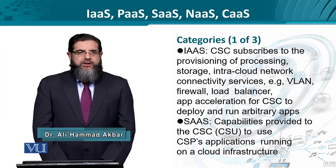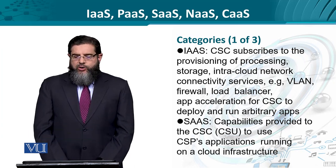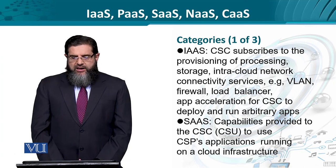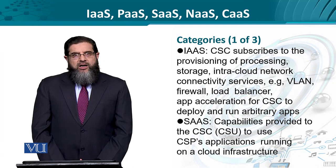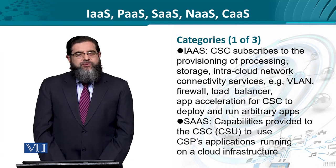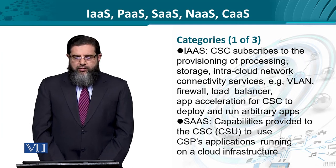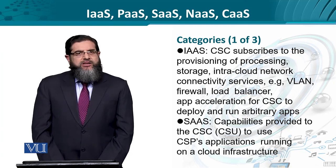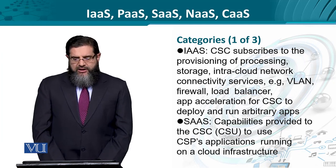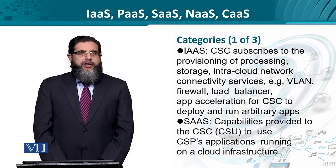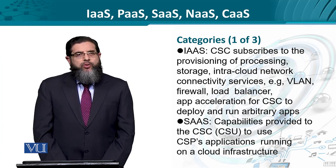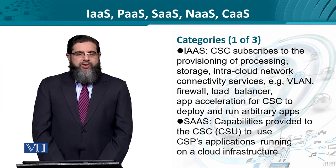We start off with Infrastructure as a Service. A consumer could subscribe to very basic computing and networking resources like processing, storage, and network connectivity — for example, VLAN, firewall rules, load balancing mechanisms, and even application accelerator services, which help an application run faster by understanding how it is running and assigning resources correspondingly. This helps the consumer run an arbitrary application on the cloud infrastructure, so the cloud is acting more like bare metal.